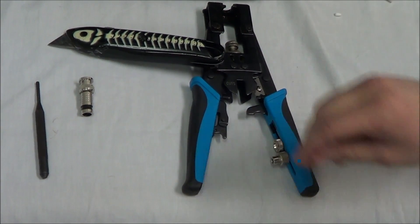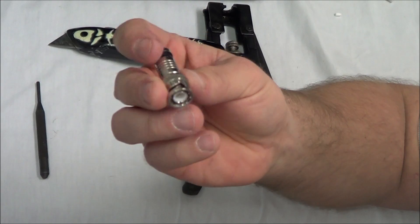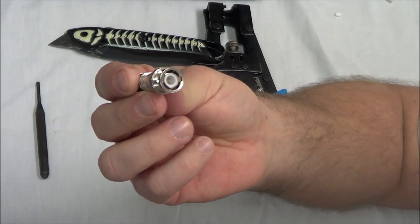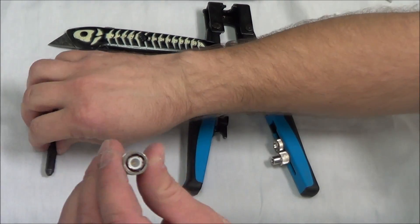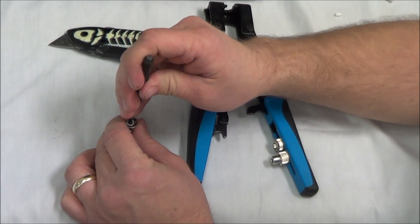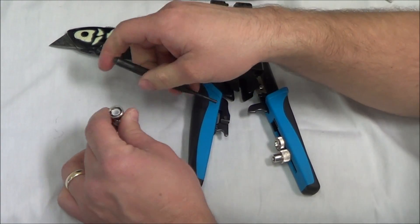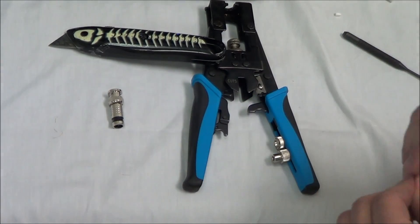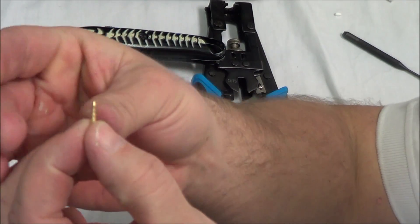Let's take our compression BNC connector, and inside there's a little needle. I'm going to take this little push pin and I'm going to go ahead and get that needle out of there. Now that's the needle.